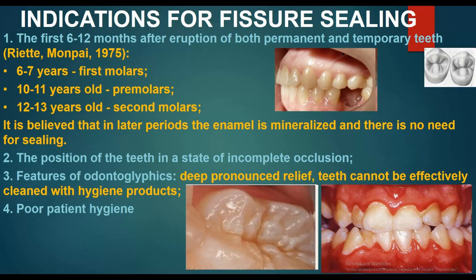Second indication: the position of the teeth in a state of incomplete occlusion. Third: features of odontoglyphics — deep, pronounced relief teeth that cannot be effectively cleaned with hygiene products. Fourth: poor patient hygiene.